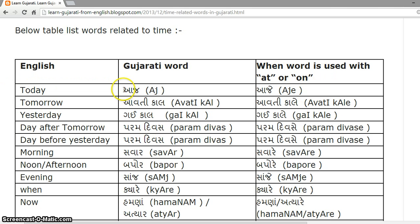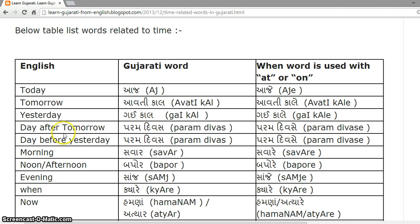Today is 'Aaj', and with 'at/on' it becomes 'Aaje'. Tomorrow is 'Aavati Kaal', becoming 'Aavati Kaale'. Yesterday is 'Gai Kaal', becoming 'Gai Kaale'. Day After Tomorrow is 'Param Divas'. Day Before Yesterday is also referred to as 'Param Divas'.